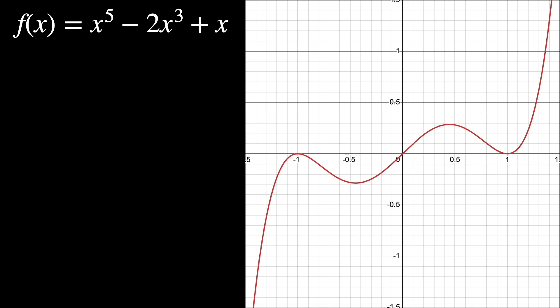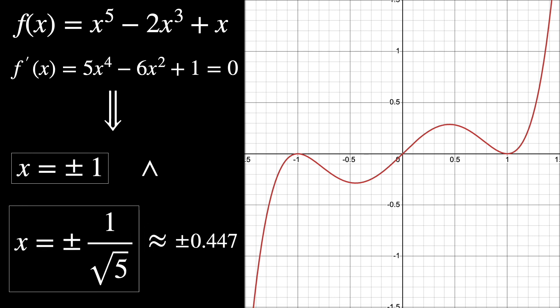Now, let's suppose we don't know the graph of this function and we're trying to draw it. So we would calculate the derivative and make it equal to 0 so that we can see what are the maxima and minima of this function. So again, solving this quartic equation, we get these four points.